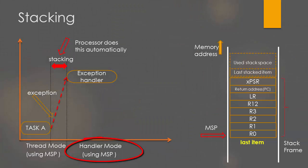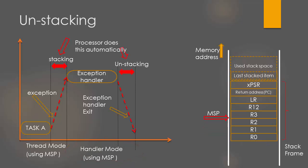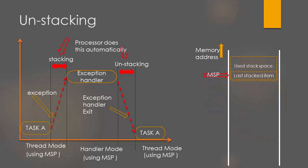When the processor finishes execution of the exception handler, it will do an exit from the exception. When it exits the exception handler, it pops back all the register contents and resumes executing task A from the point where it left during entry into the exception. Popping back is called the unstacking operation. Remember, the stacking and unstacking operations during exception entry and exit are taken care of by the processor automatically.